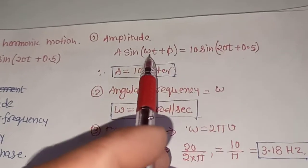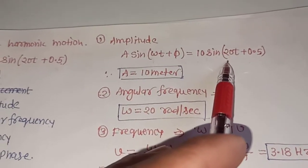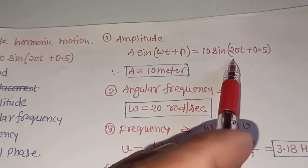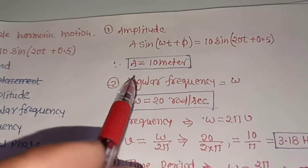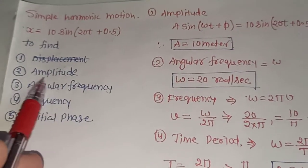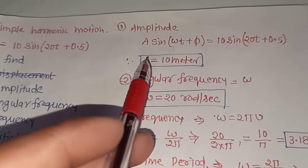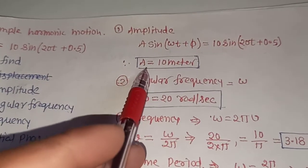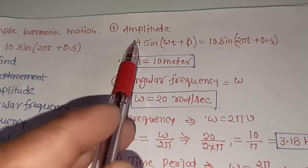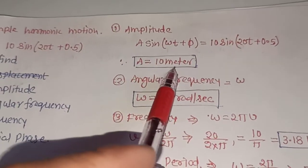You will compare both equations — the given equation with the standard SHM equation — and it would be very easy to find all the parameters. So the first parameter is amplitude. You can see the value of A here; it is 10, so the amplitude will be 10 meters.